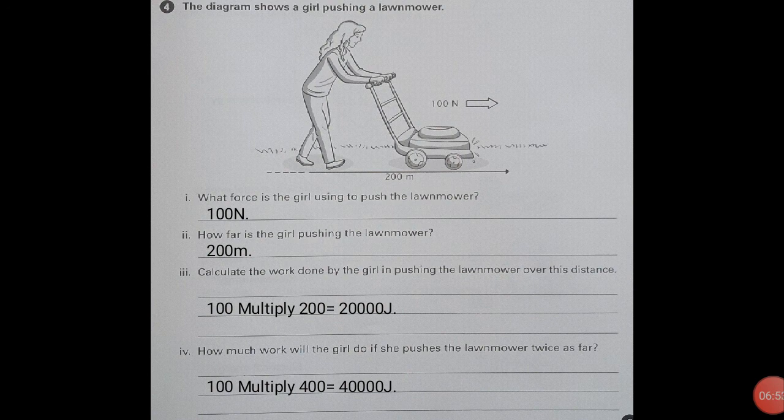How much work will the girl do if she pushes the lawnmower twice as far? We multiply hundred by four hundred. The answer we got is forty thousand joules. Today's lecture ends here.